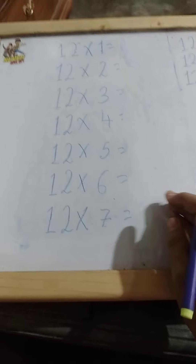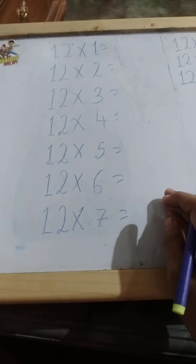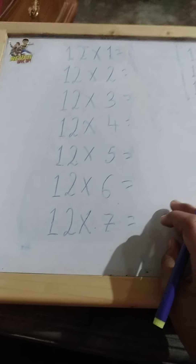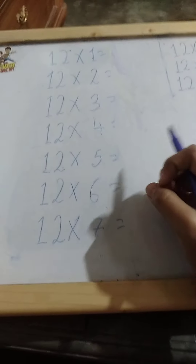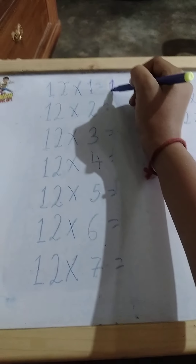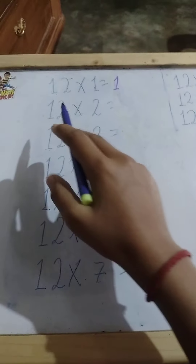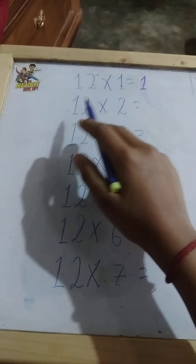Hello friends! Today we will learn the table of 12 using a very easy trick. First of all, we have to write 1 1. So here we have written 1 and 1.